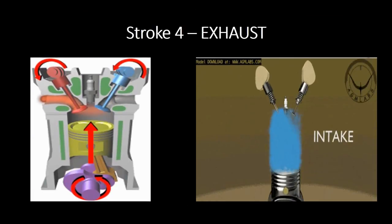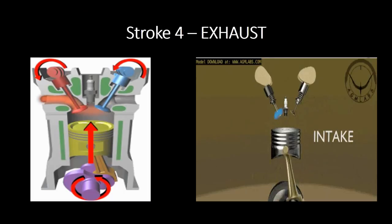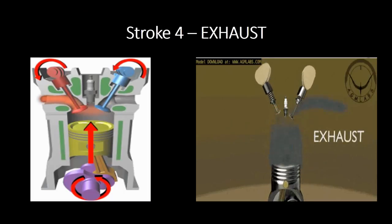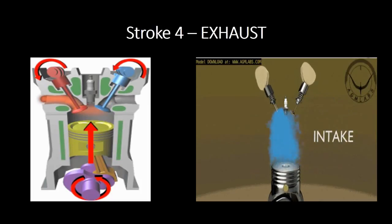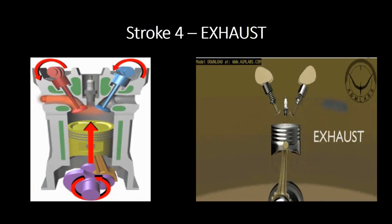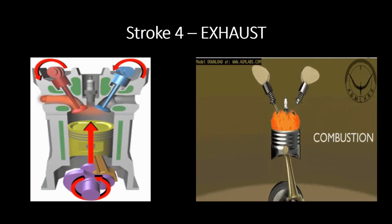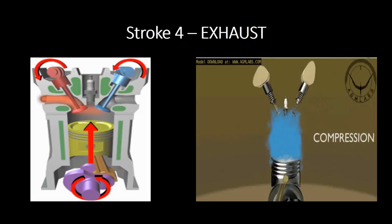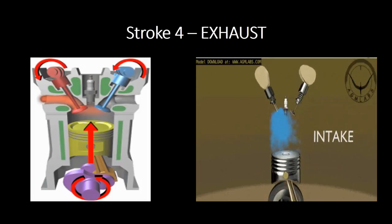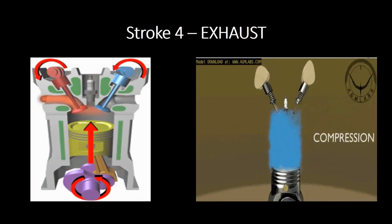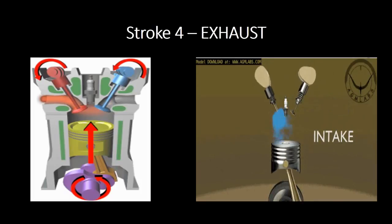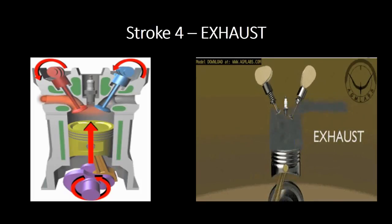The exhaust stroke starts with the piston at BDC after the power stroke is finished. During this stroke, the exhaust valve is open and the movement of the piston from BDC towards TDC pushes most of the exhaust gases out of the cylinder into the exhaust pipes. During the exhaust stroke, the engine consumes energy, with the crankshaft rotating due to the inertia of the components.